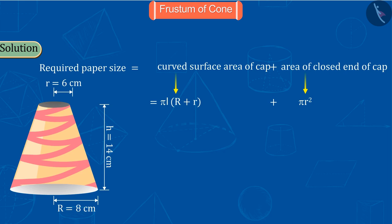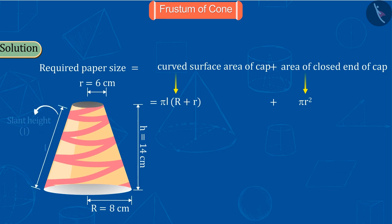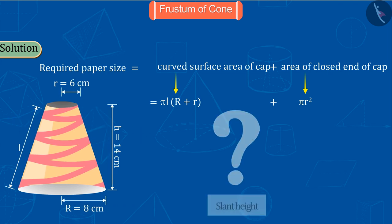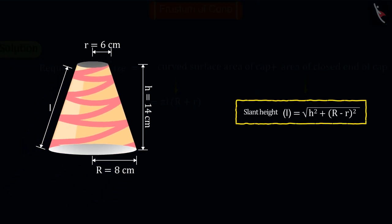Now how can you find the slant height? Well done. We can find the value of the slant height from this formula. Replacing all values and solving, we get the value of l, that is slant height, 10 root 2 centimeters.